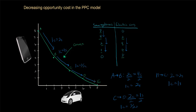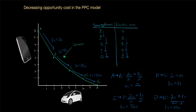Finally, as the country moves from D to E along the production possibilities curve, it gains two more cars and the cost is only one smartphone again. So one car equals one half of a smartphone. Along this production possibilities curve, the opportunity cost of electric cars in terms of how many smartphones had to be given up is decreasing.